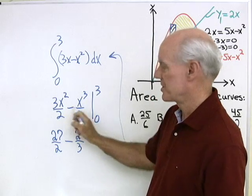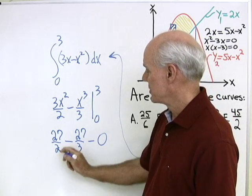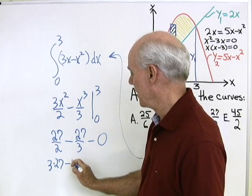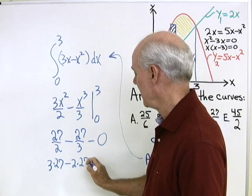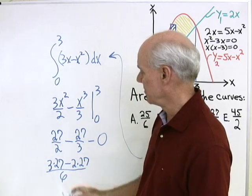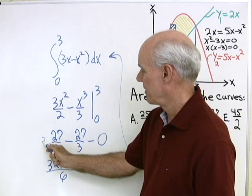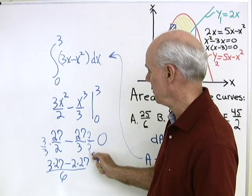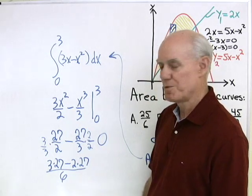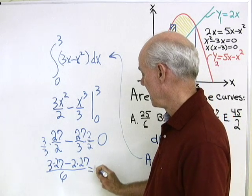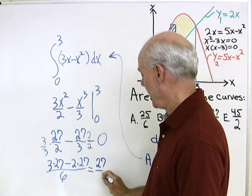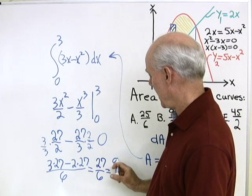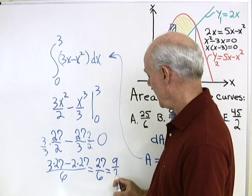Minus what I get when I substitute in 0, which is just 0. I have 3 times 27 minus 2 times 27, all divided by 6 when I multiply this by 3 over 3 and this one by 2 over 2. 3 times 27 minus 2 times 27 is just 27 divided by 6. Both are divisible by 3, so 9 halves.